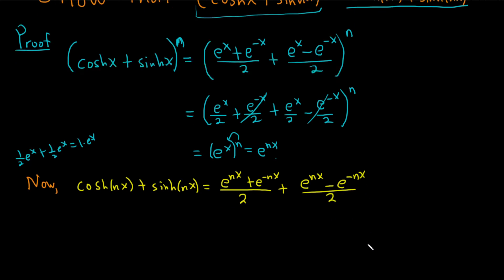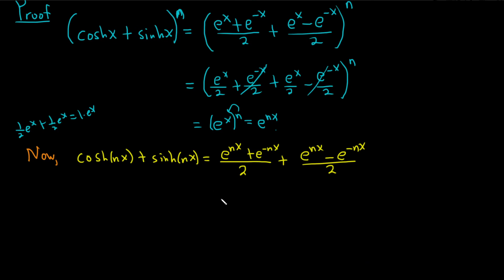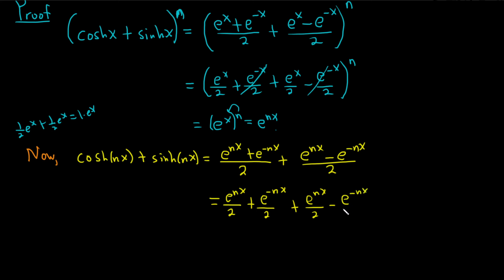Same thing now — we'll break it up into four sums: e to the nx over 2, plus e to the negative nx over 2, plus e to the nx over 2, minus e to the negative nx over 2. The negative nx terms cancel, and we have 1 half e to the nx plus 1 half e to the nx, which gives us e to the nx. So they're both equal to e to the nx, so they must be the same.